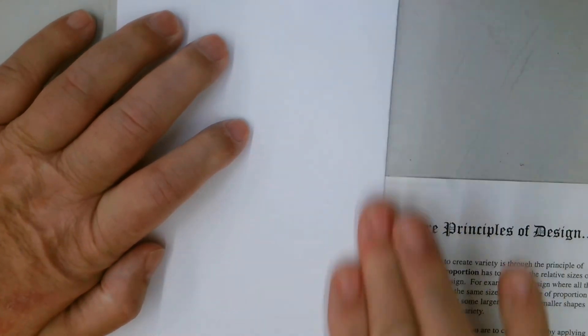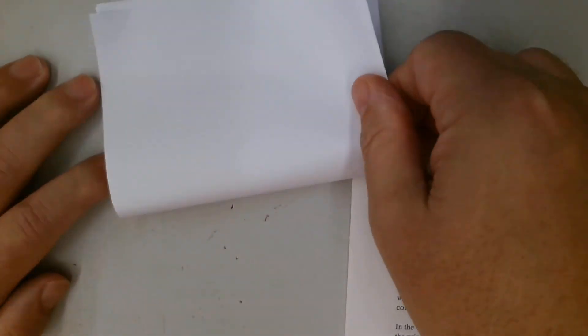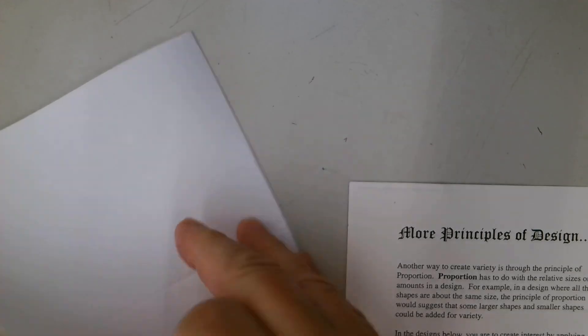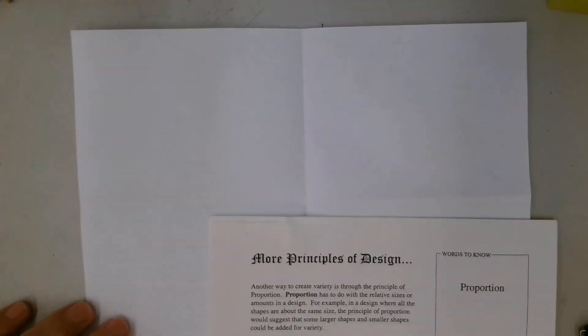All right, so here we've got a six-pointed star, a flower shape, and a cube shape. So what we're going to do is we're going to fold our paper for this activity. We're going to fold our paper in half, and we're going to fold that half in half, and that's going to give us four areas to do our project in.